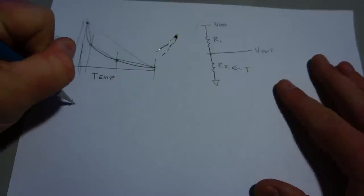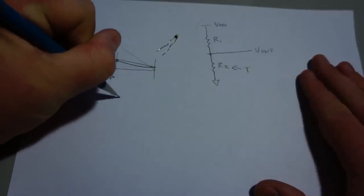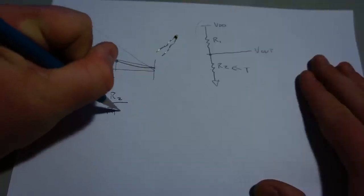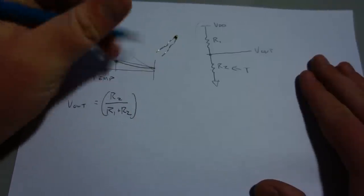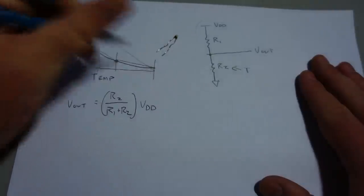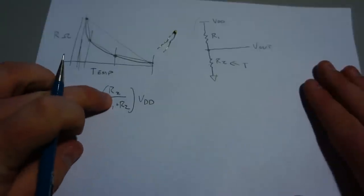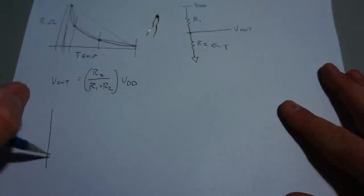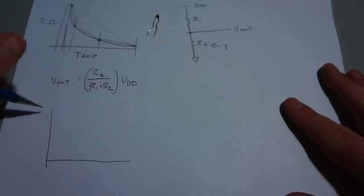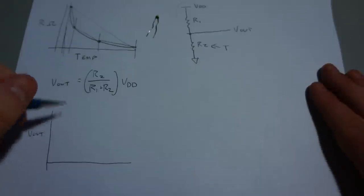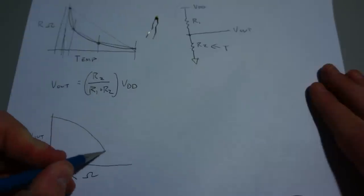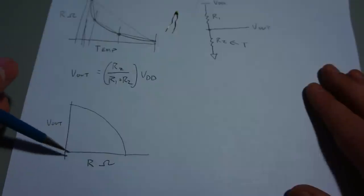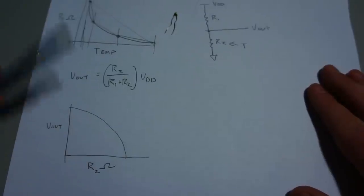So you have V out equals R2 over R1 plus R2, and that whole thing times VDD. So, if you graph this via R2, so R2 changes, you get something that looks like this. So, as R2 increases, V out goes down non-linearly.